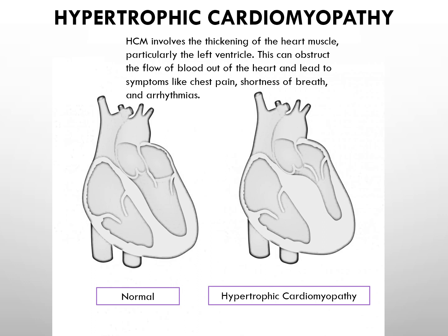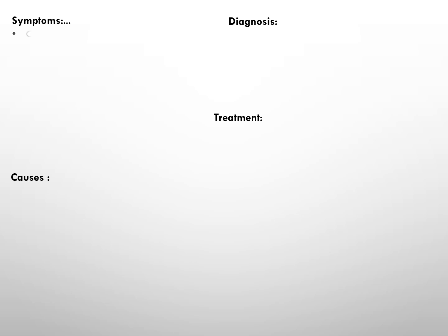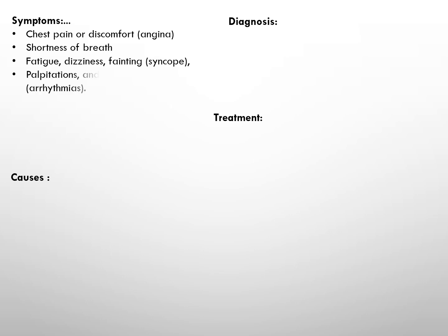In hypertrophic cardiomyopathy, the heart muscle becomes thicker than normal, particularly in the septum and sometimes the left ventricle itself. This thickening can lead to an obstruction of blood flow out of the heart, known as left ventricular outflow tract obstruction. Symptoms resemble those of heart failure and include chest pain or discomfort, shortness of breath, fatigue, dizziness or fainting, palpitations, and irregular heartbeats.